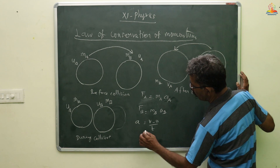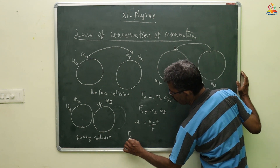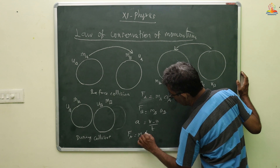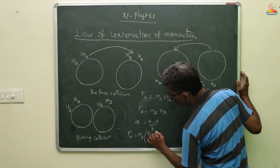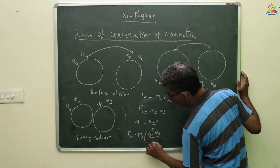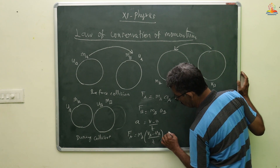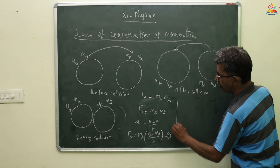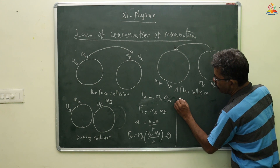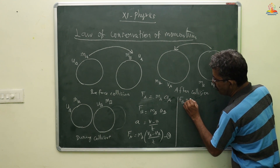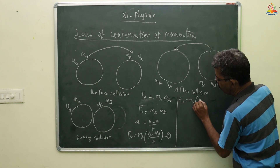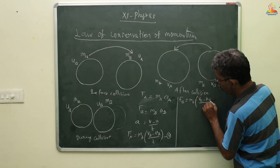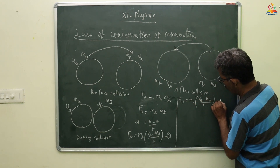Substituting: F_A equals M_A times (V_A minus U_A) divided by T — this is the first equation. Next, F_B equals M_B times (V_B minus U_B) divided by T — this is the second equation.